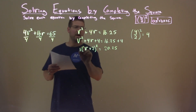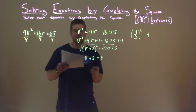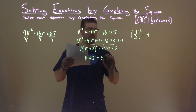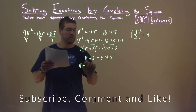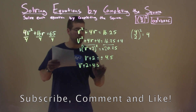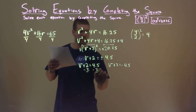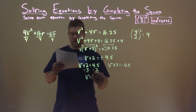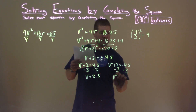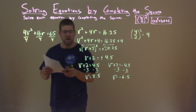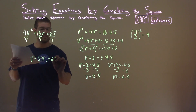We can take the square root of both sides, and we're left with v plus 2 equals plus or minus the square root of 20.25, which is 4.5. Writing as two equations: v plus 2 equals positive 4.5, and v plus 2 equals negative 4.5. Subtracting 2 from both sides: v equals 2.5. Subtracting 2 again: v equals negative 6.5. Our two solutions are v equals 2.5 and negative 6.5.